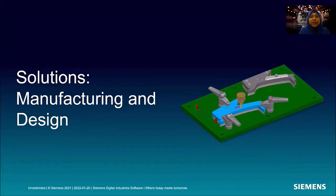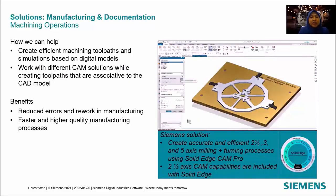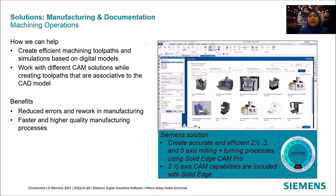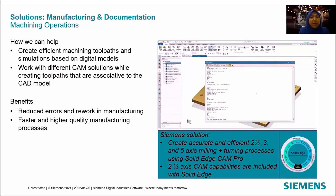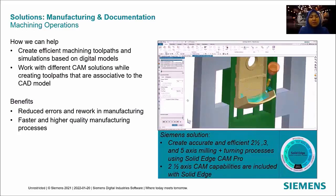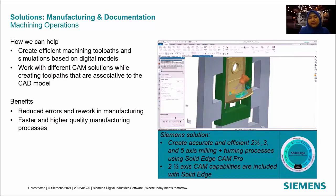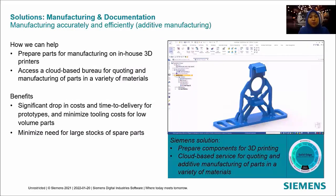Moving to the solution for manufacturing: Solid Edge CAM Pro is our solution for creating toolpaths for machining operations. Toolpaths for Solid Edge CAD models can also be created using most third-party CAM software. By using Solid Edge CAM Pro, we reduce errors and rework in manufacturing and produce faster, higher-quality manufacturing processes. Solid Edge can also prepare parts for 3D printing and access a cloud-based bureau for printing and manufacturing in a variety of materials, reducing cost and time to delivery for prototypes and minimizing tooling costs for low-volume parts.